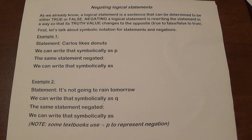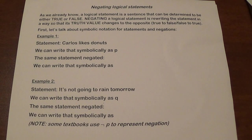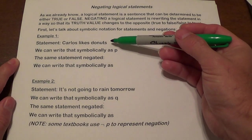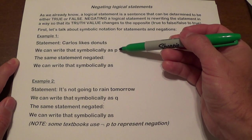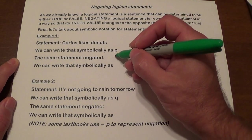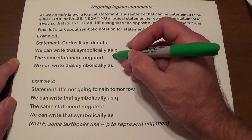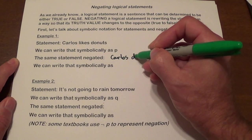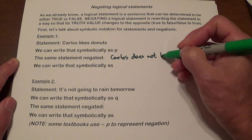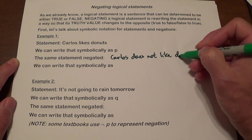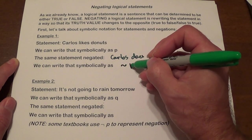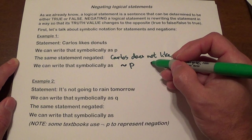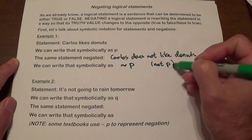First let's talk about how we write this symbolically. The statement is going to be: Carlos likes donuts. We can write that symbolically as P. They use lowercase letters to represent statements. The same statement negated — if Carlos likes donuts is our statement, then to negate that: Carlos does not like donuts. We write it symbolically using this tilde and then P, so that means not P. This is how we read that.